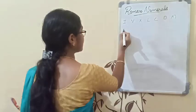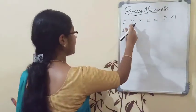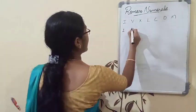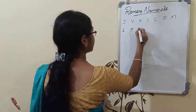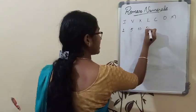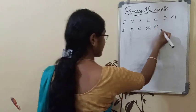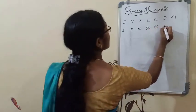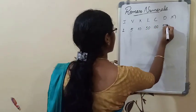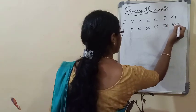The values are as follows: I means one, V means five, X means ten, L means fifty, C means hundred, D means five hundred, and M means thousand.